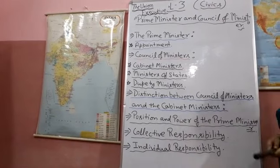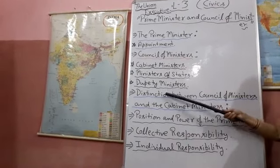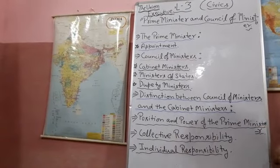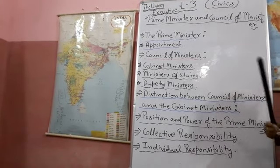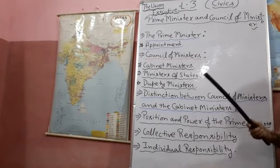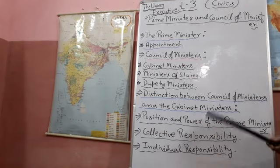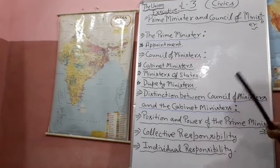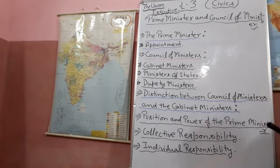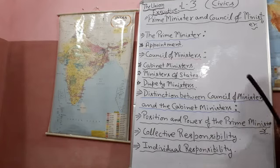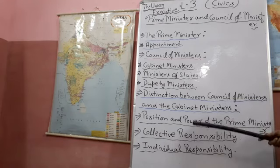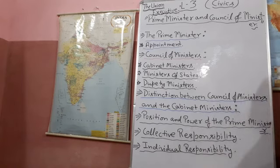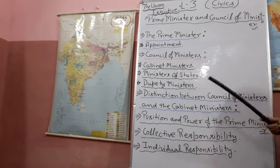Today, let me explain you about the distinction between the Council of Ministers and the Cabinet Ministers. The terms Ministry and Cabinet are often used as interchangeable terms, but actually they are not. Prior to the 44th Amendment Act 1979, not a word about the Cabinet was mentioned in the Constitution — it spoke only of the Council of Ministers. The 44th Amendment Act, however, provides that the President shall not issue a proclamation of emergency. The Cabinet here means the Council consisting of the Prime Minister and other Ministers of Cabinet rank.